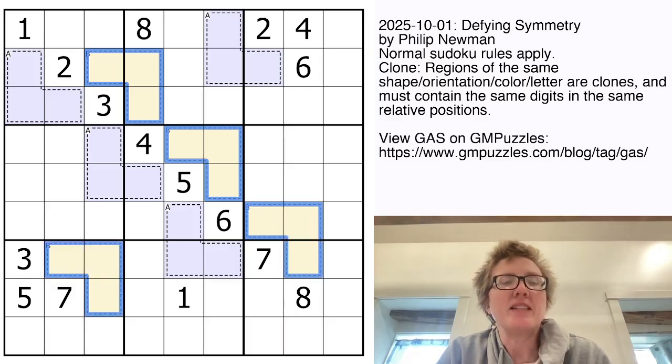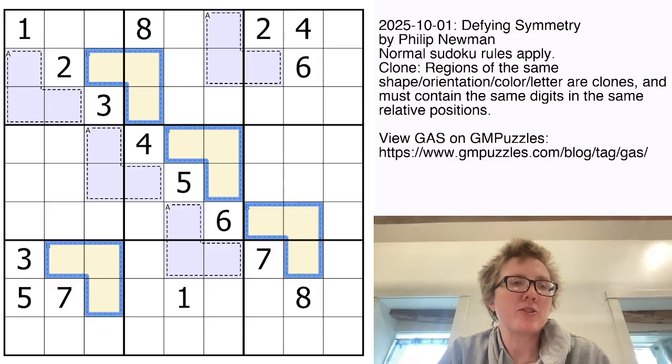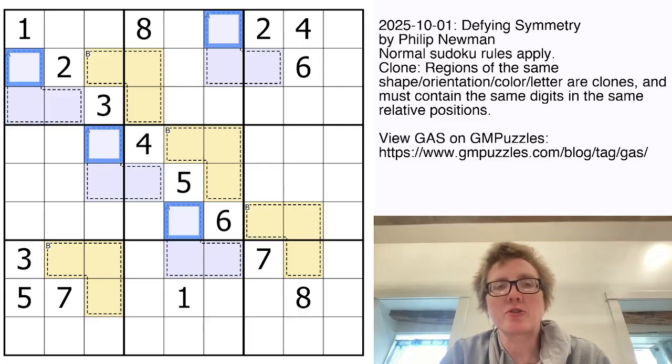And in all of the blue A cages, we have to have exactly the same set of three digits in the same position. So the digit here has to be the same as the digit here, here, and here. And the same is true for all of the B cages.